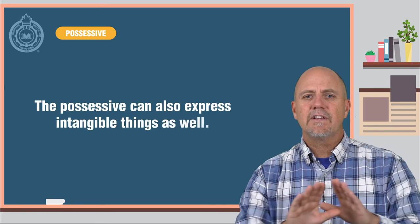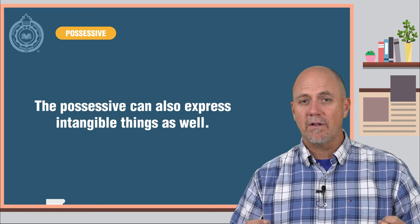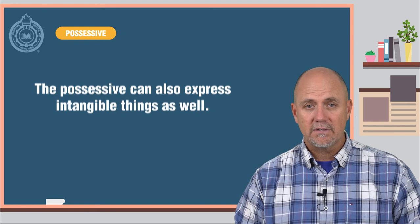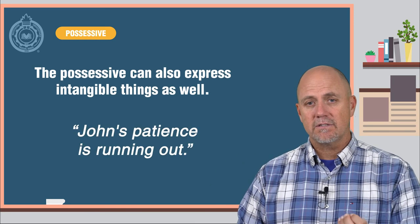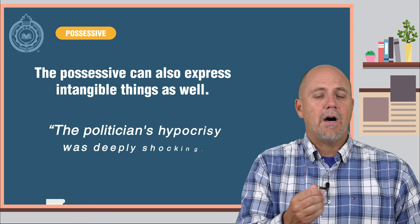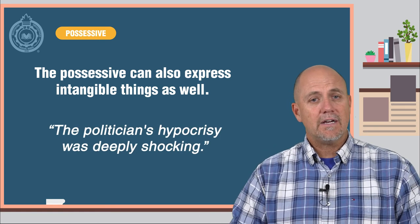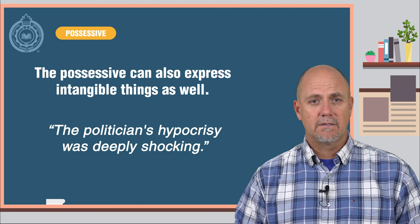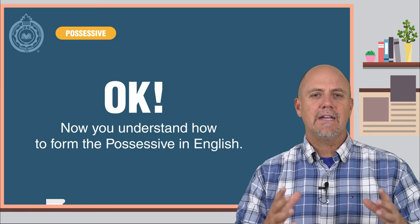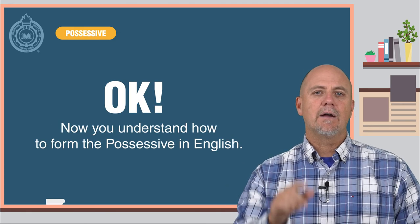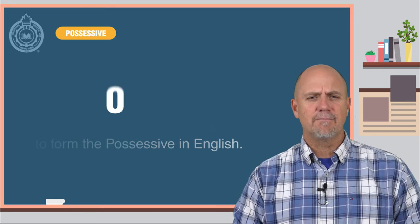The possessive can also express intangible things as well, not just physical possessions. Here are some examples: John's patience is running out. The politician's hypocrisy was deeply shocking. Okay, now you understand how to form the possessive in English. I will see you back here again for the next lesson. Good luck.